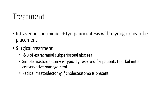Treatment includes intravenous antibiotics plus or minus tympanostomy with myringotomy and tube placement. Surgical treatment includes drainage of extra-cranial subperiosteal abscess. Surgical mastoidectomy is typically reserved for patients who have failed initial conservative management. Radical mastoidectomy is indicated if cholesteatoma is present.